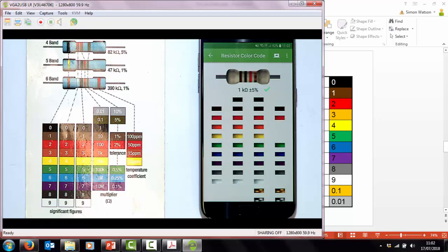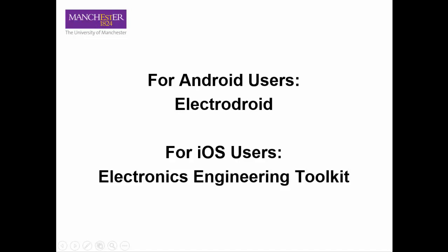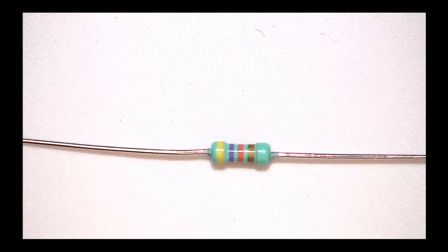You do not need to memorise the colour chart. These will either be provided in paper form or you can use an app. There are many apps available to help electronic engineers. For Android users, Electrodroid is a good app. And for iOS users, Electronics Engineering Toolkit can be used. Other apps are also available. Let's look at some examples.